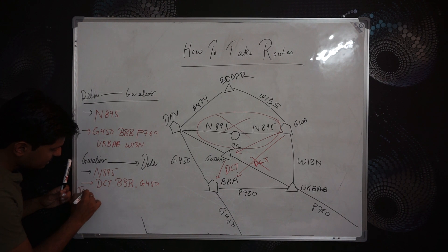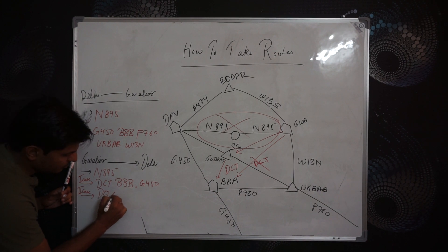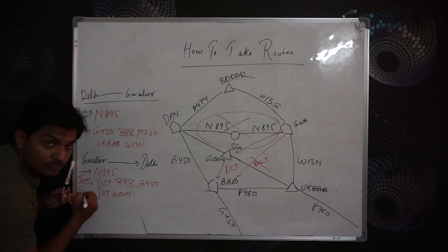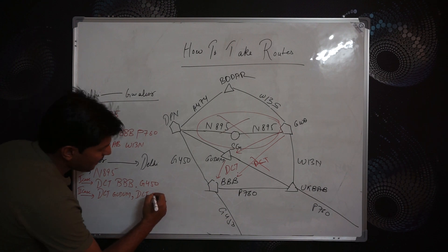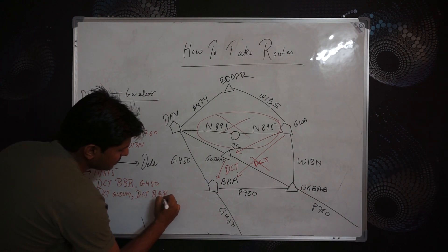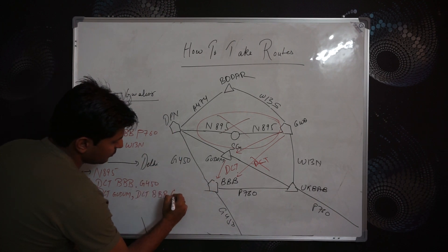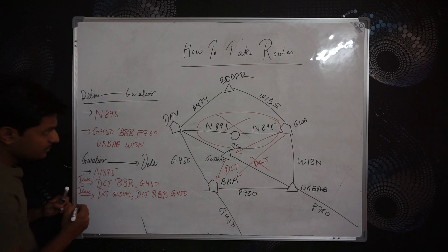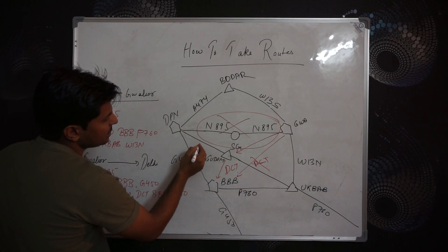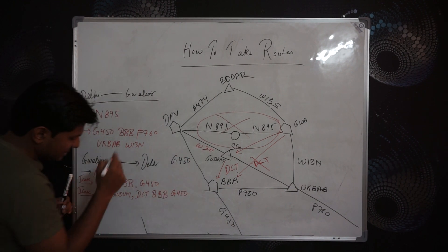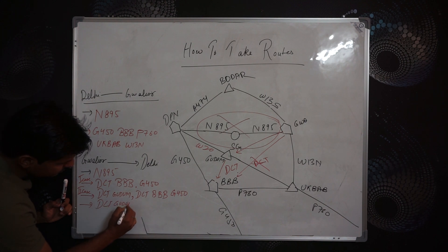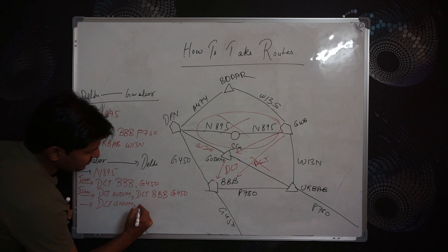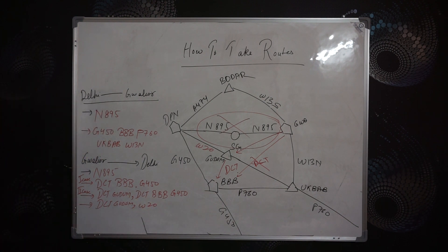In the second case you can write: DCT GUDU, DCT Bravo Bravo Bravo, then GOL 450. Or if there is a route like Whisky 20, you take that route as well. This is how you are supposed to write your route, and this is how your route will be given in your exam flight plan.